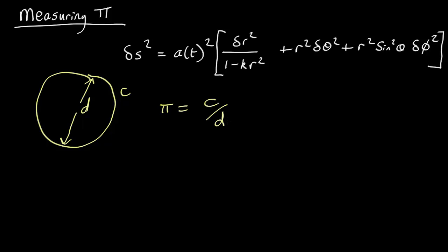Easy enough. So that's something we could in principle measure experimentally. We could map out a circle by getting a whole bunch of points some distance r, d over 2, out from the center and then go all the way around the edge and measure the circumference and take the ratio of the two.